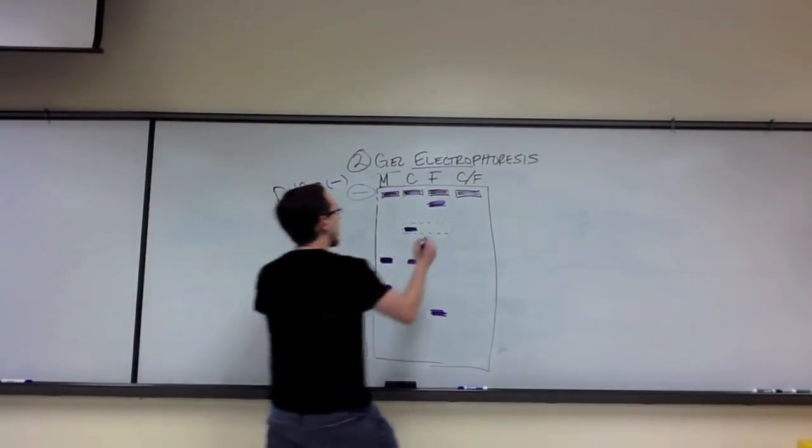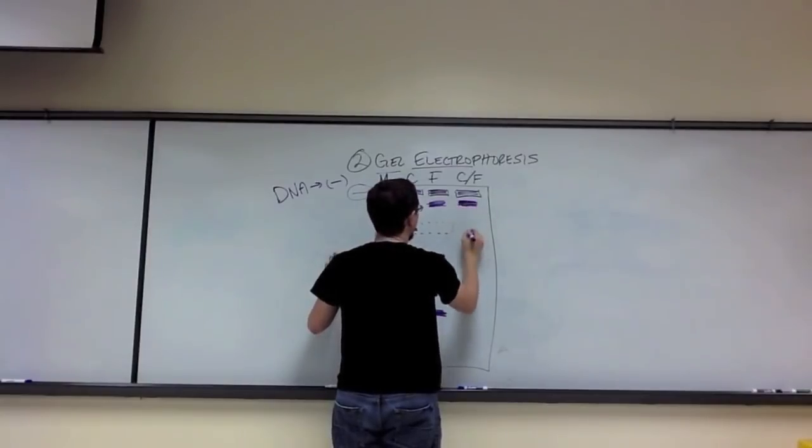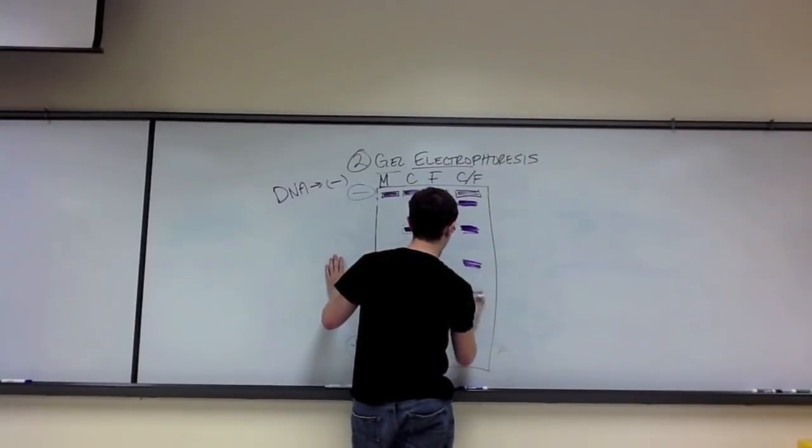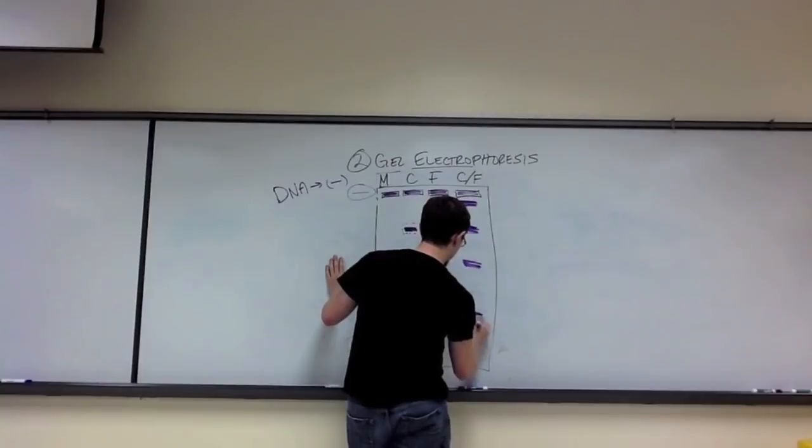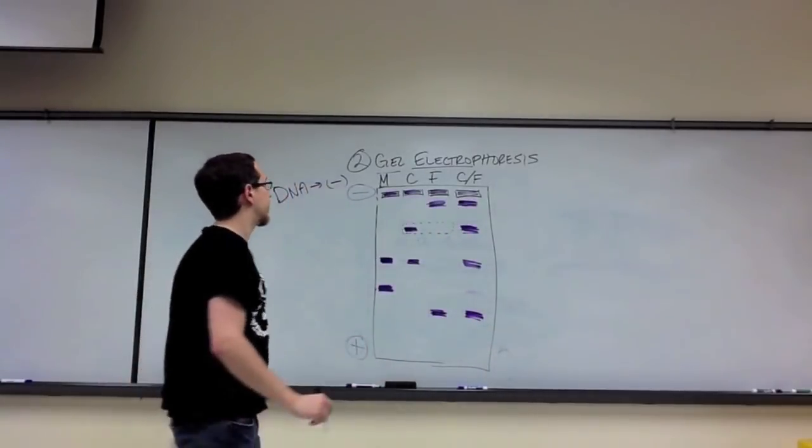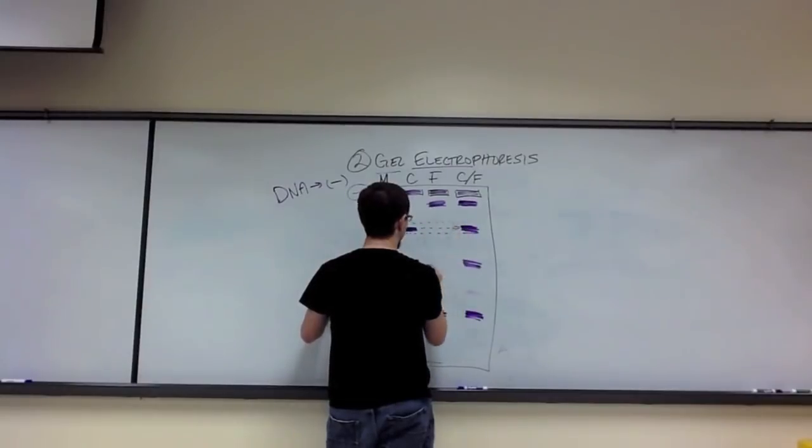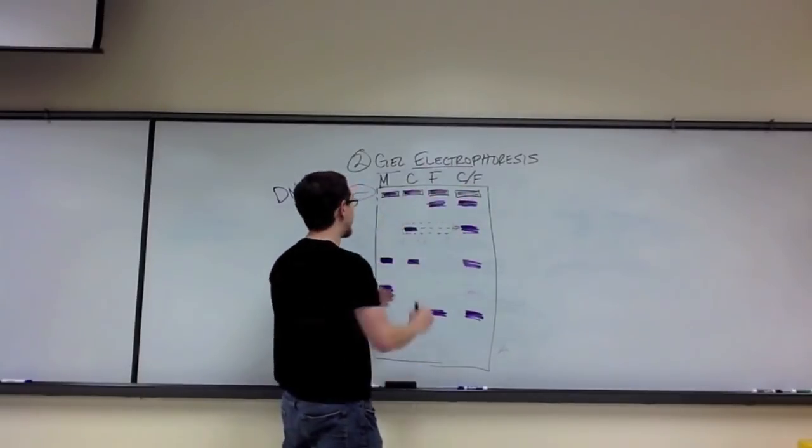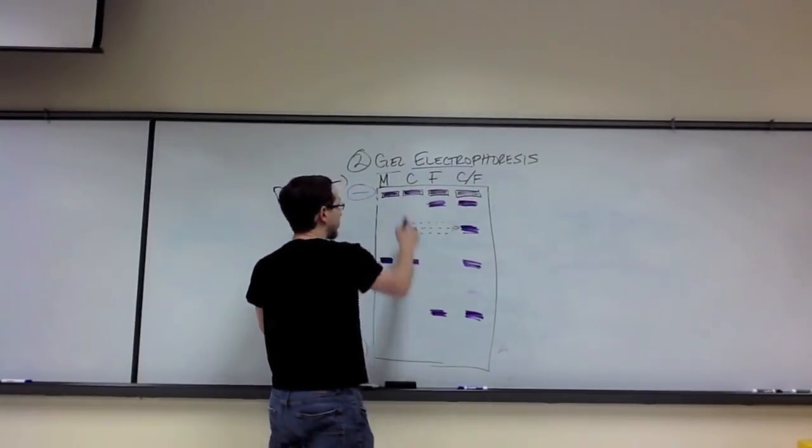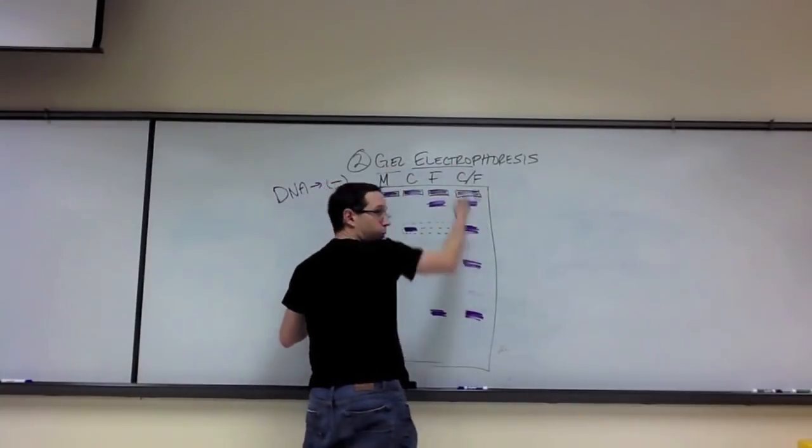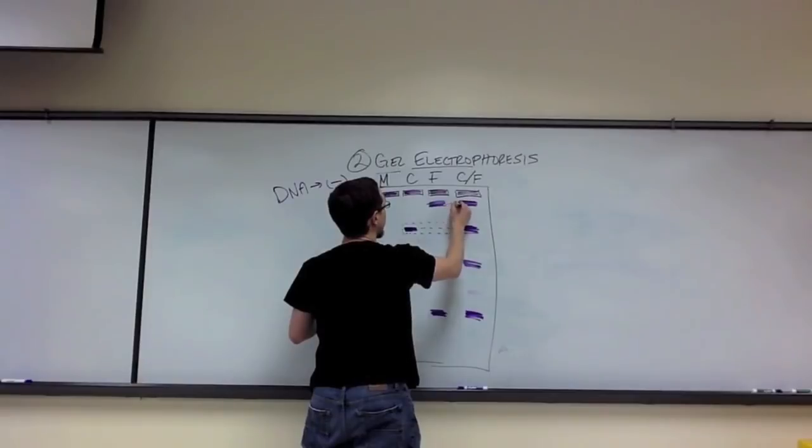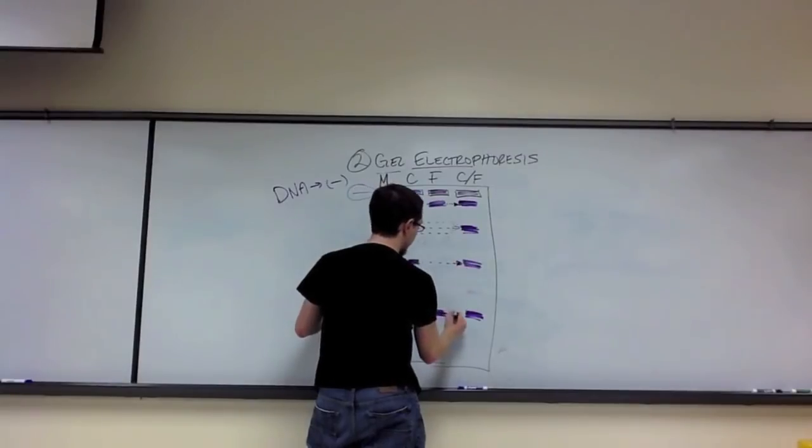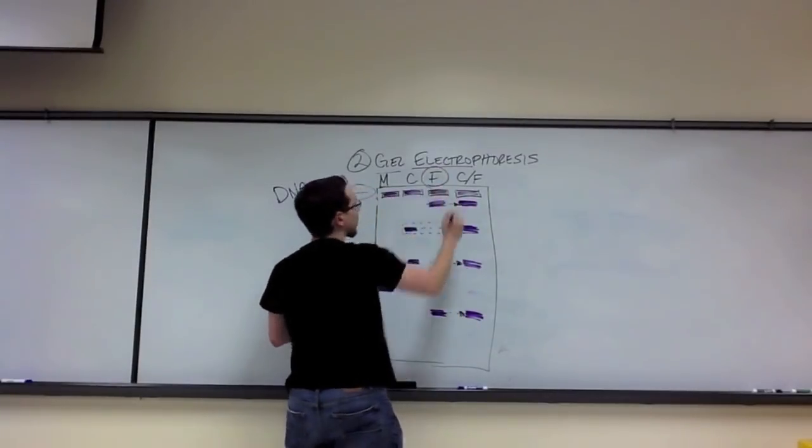A lot of students make the mistake of, in this lane, seeing this and saying, oh, he must be his father because this band is here. Well, that band, of course, is going to be there because the mixture was child DNA and father DNA, and because these two bands were in the child's DNA in the first two, they're going to, of course, be in the mixture here. The father donated this band in the mixture, the child donated this band in the mixture, and the male donated this band in the mixture.